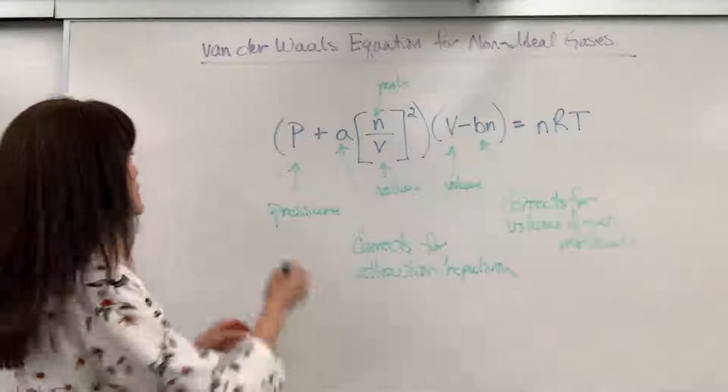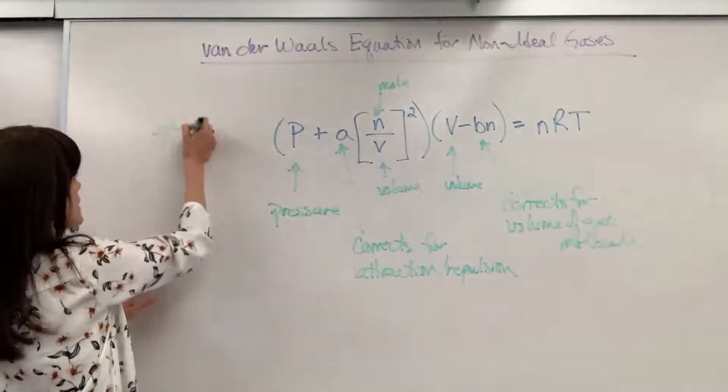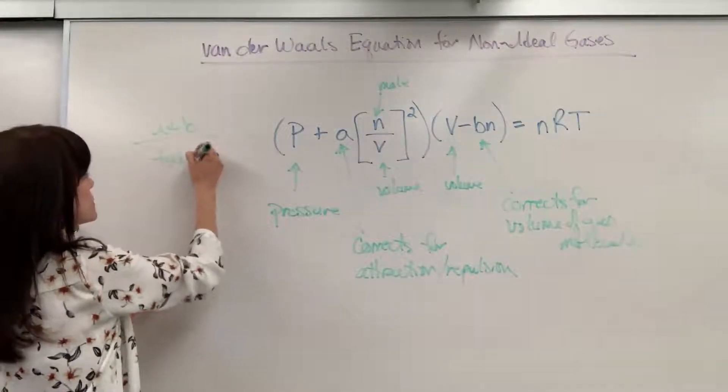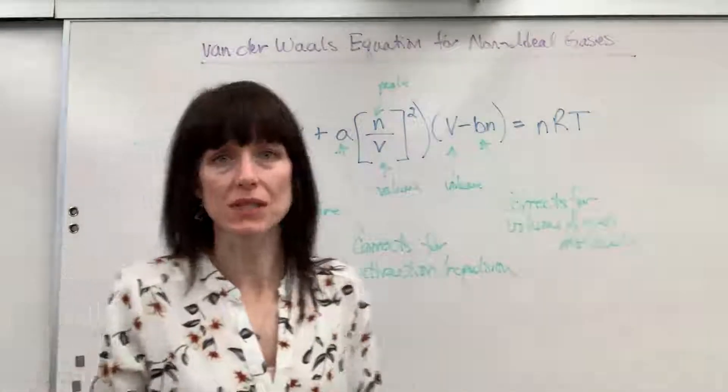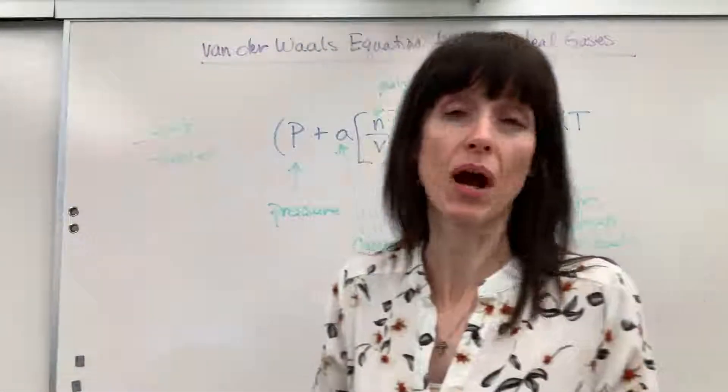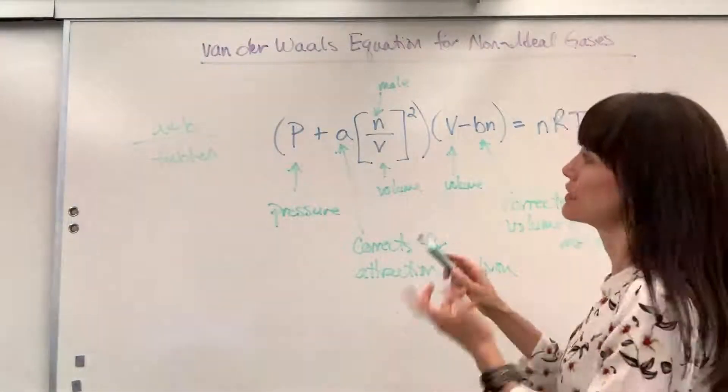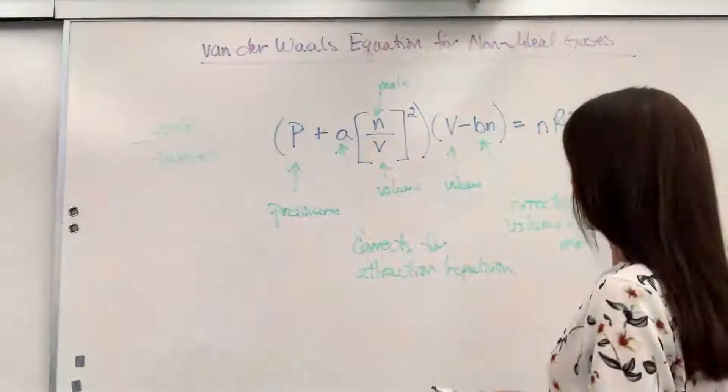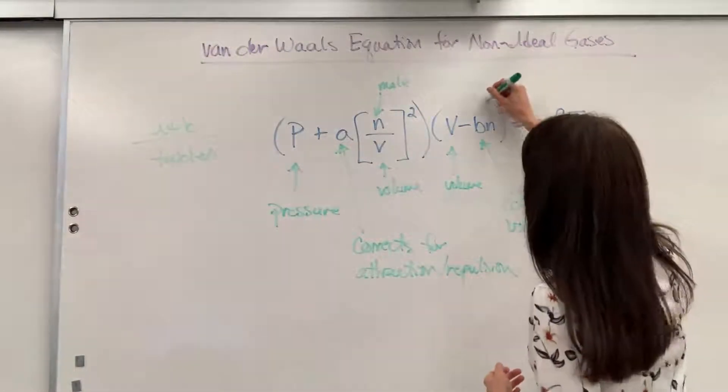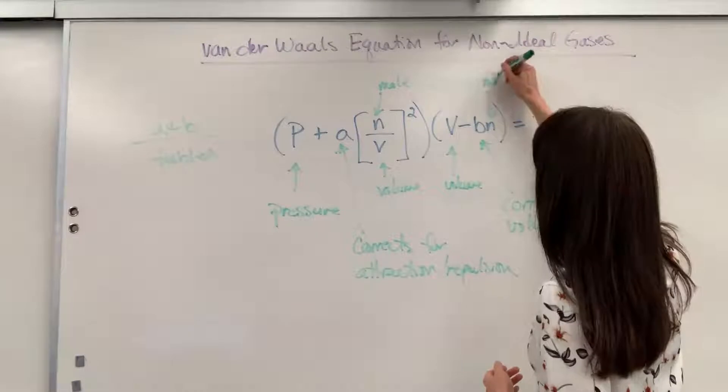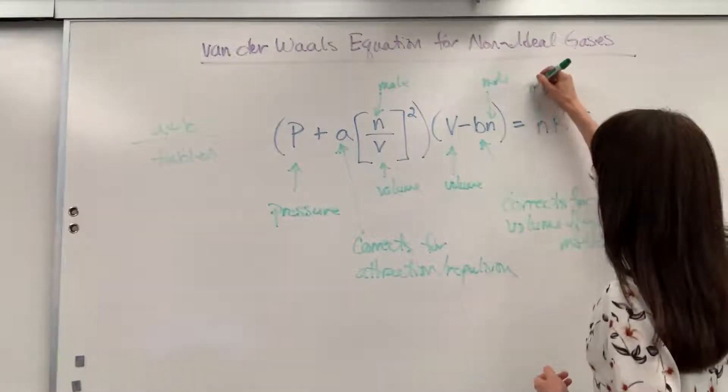Now both of these, I'm going to write this over here, A and B, you have to look at tables. There will be tables that are given to you or a problem might even just give you the A and the B. And then N, of course, this is still going to be mole.